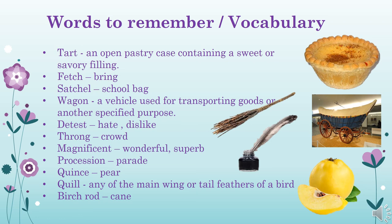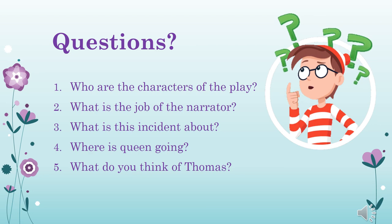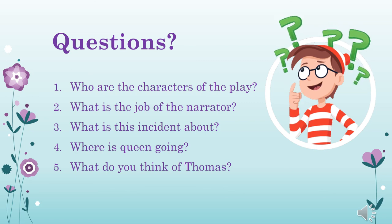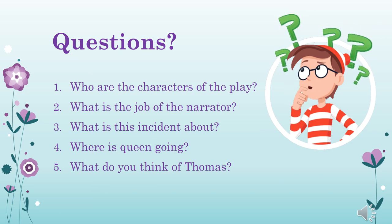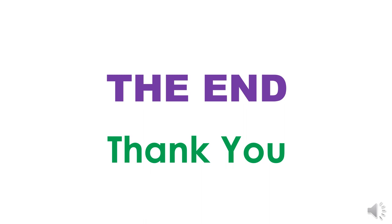Detest: hate or dislike. Throng: crowd. Magnificent: wonderful, superb. Procession: parade. Quince: a pear-like fruit. Quill: any of the main wing or tail feathers of a bird. Birch rod: a cane. Now, children, it is your time to answer these questions by reading the chapter. Question 2: What is the job of the narrator? Question 3: What is this incident about? Question 4: Where is the queen going? Question 5: What do you think of Thomas? This is the end of our lesson — I hope you understood it very well. Thank you for watching.